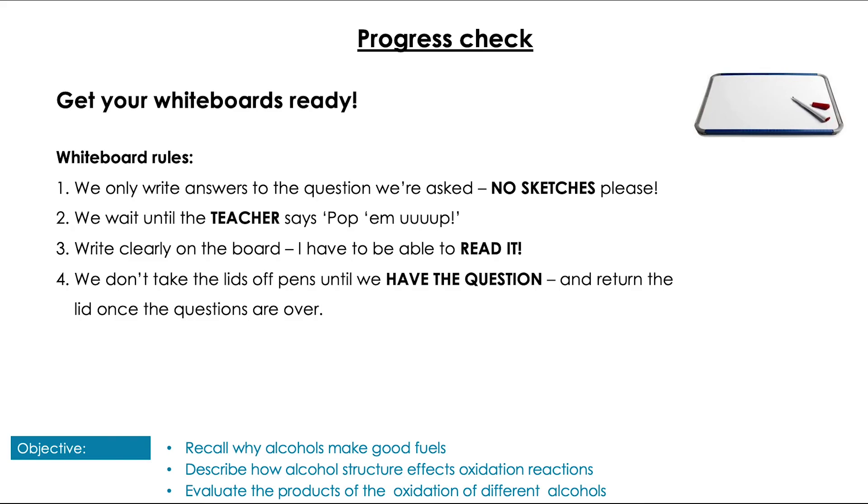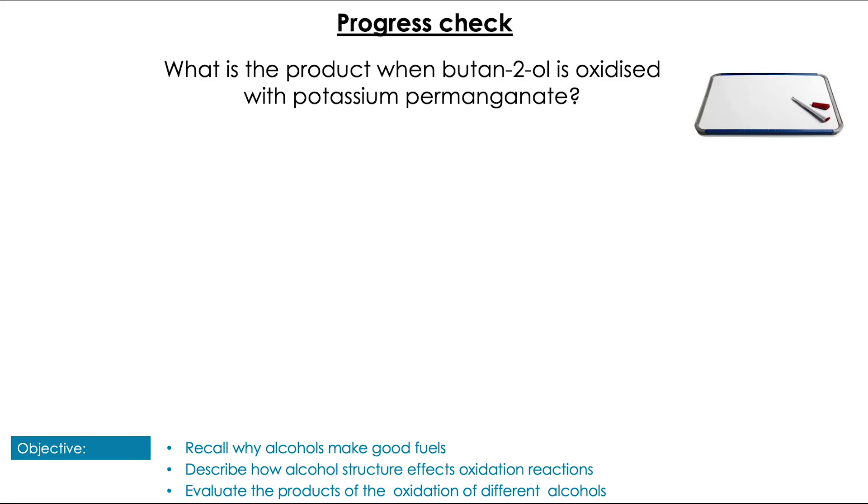Time to test yourself out on it then. What would the product be when butan-2-ol is oxidized with potassium permanganate? We can see if we draw out butan-2-ol, we know that we have a secondary alcohol. If we have a secondary alcohol, we can't fully oxidize this. We can't go to a carboxylic acid. We're just going to be removing the hydrogens on the carbon and on the oxygen. So we're going to go through to a ketone by removing these hydrogens, giving our C double bond O on that second carbon and our carbon chains either side. Lovely stuff.